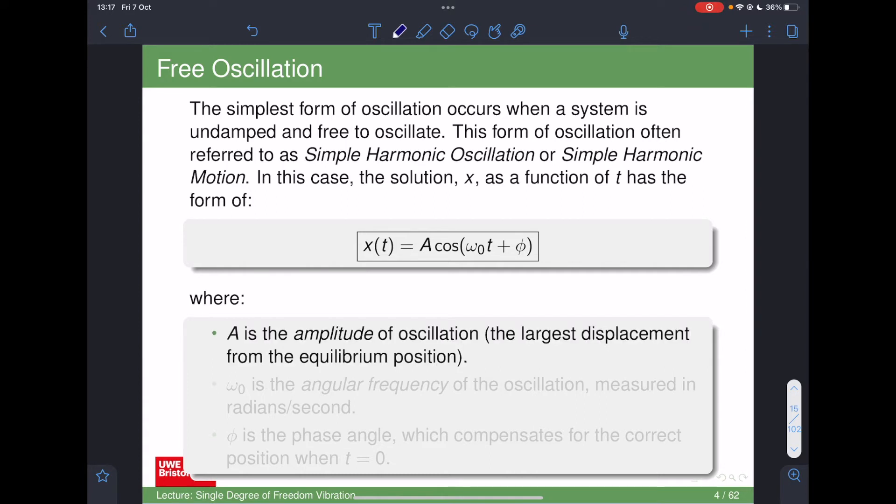A is the amplitude of oscillation, how big it is, the largest displacement. Amplitude is measured from the middle to the top or the middle to the bottom in terms of magnitude, not from top to bottom. So from the equilibrium to the peak or the equilibrium to the trough.